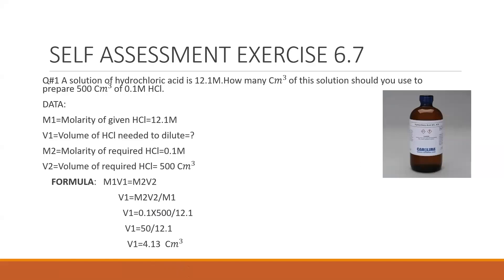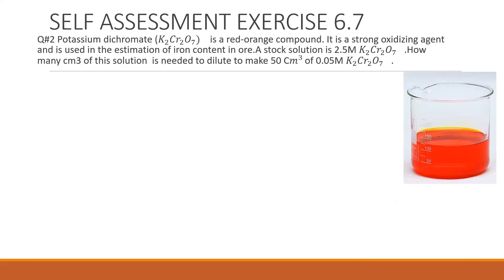So 4.13 cm³ is the required volume of stock solution needed to dilute HCl to make 500 cm³ of 0.1 M solution. Problem 2: 50 cm³ of a solution is 2.5 molar potassium dichromate. How many cm³ of this solution is needed to dilute to make 50 cm³ of 0.05 M potassium dichromate?